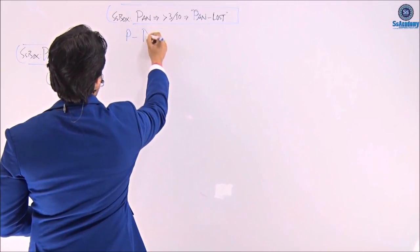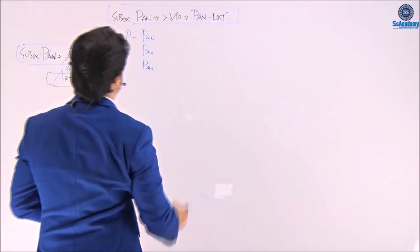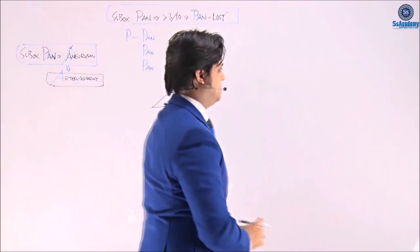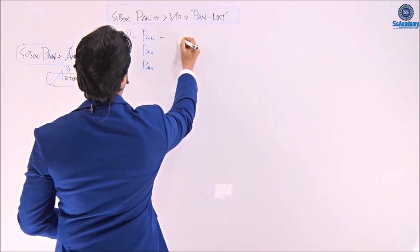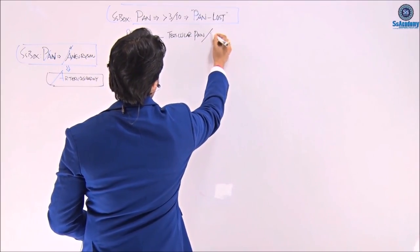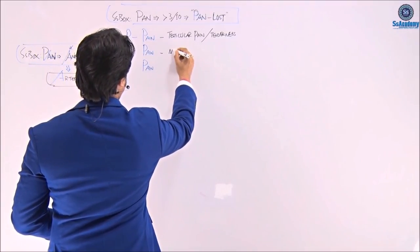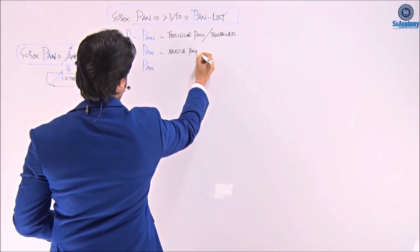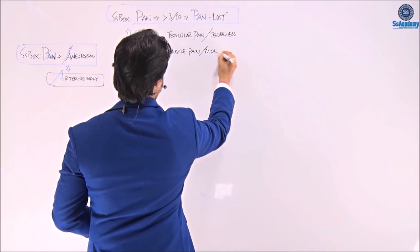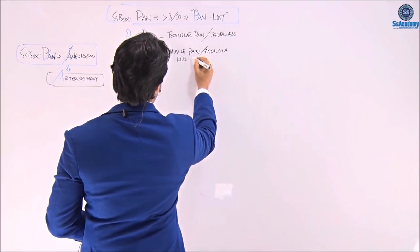P stands for pain, pain, pain. The first pain is testicular pain or tenderness. The second pain is muscle pain — myalgia — or muscle tenderness, especially leg pain and leg tenderness. Sometimes the patient also presents with leg weakness.